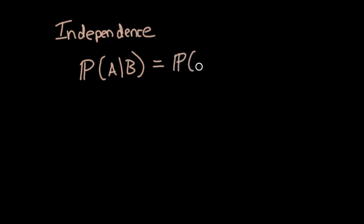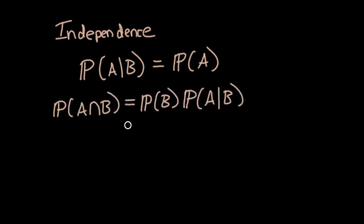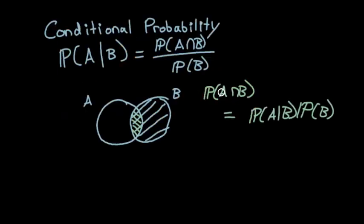Now we can talk about independence. Something is independent if we have probability A given B, it would be independent if that just equals the probability of A. So given that B happens, it's still just the probability of A. That means it didn't actually matter that B happened. Probability of A given B equals just the probability of A. And recall what we said earlier, probability of A intersection B equals the probability of B times the probability of A given B. Remember that from just a second ago?